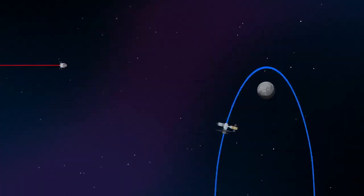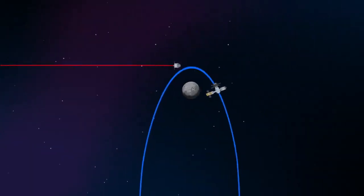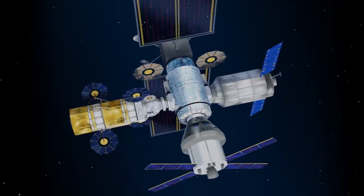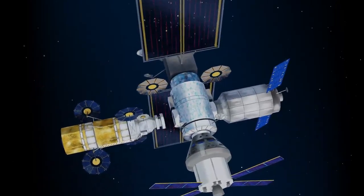Returning to our crew as they approach Gateway, the Orion must match the elliptical orbit of the station in order to successfully dock. Once on board, pre-selected crew members transfer to the lunar lander, while those assigned to Gateway remain on station.